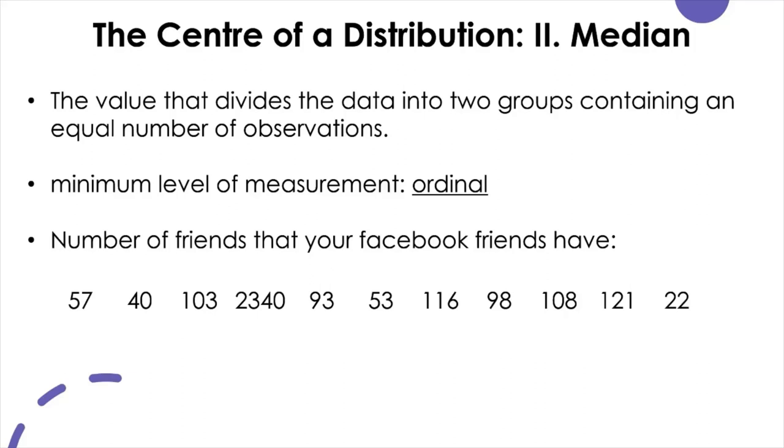Another central tendency measure is median, which literally means the middle score. By definition, median is the value that divides the data into two groups containing an equal number of observations. Because you need to be able to rank order between the values to calculate the median, you can only calculate this quantity for the ordinal or above levels of measurement. You cannot calculate median for the nominal level of data.